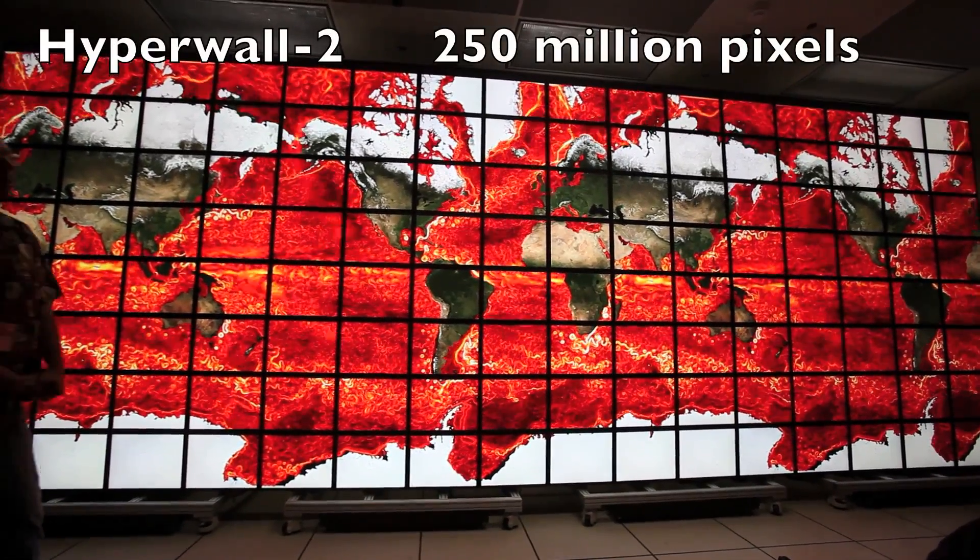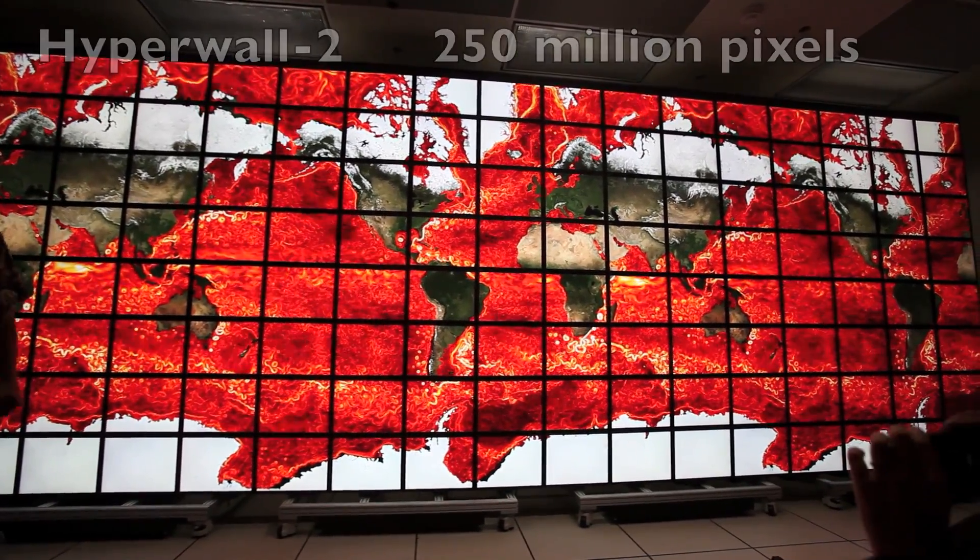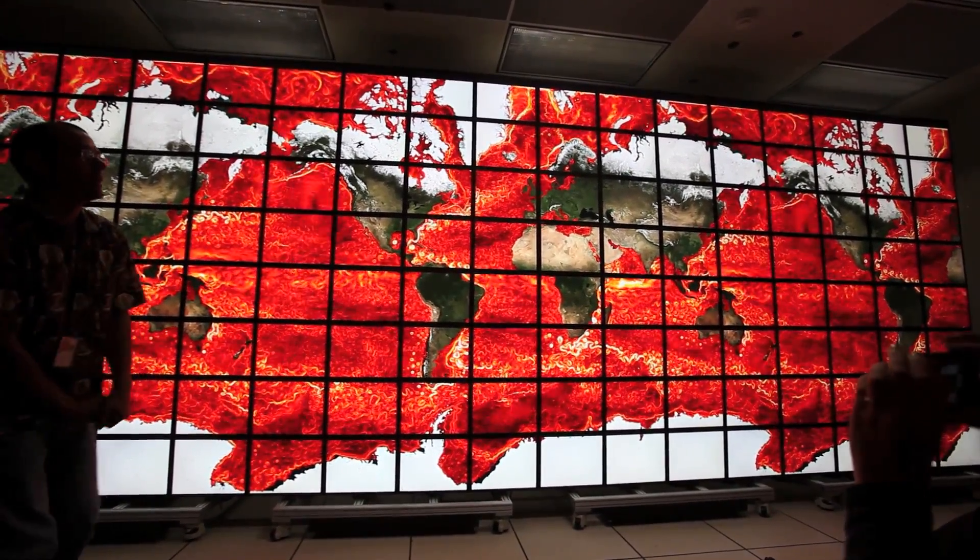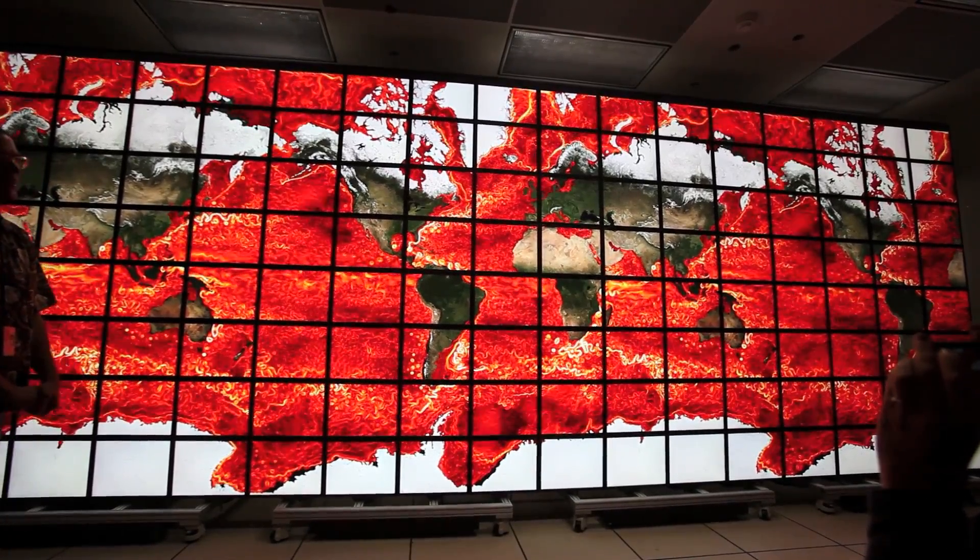This is showing global ocean circulation, shown at about three days per second. This is just under a year, nine or ten months of data.